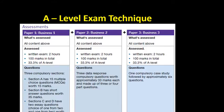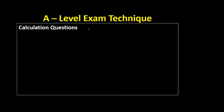Having said that, paper three also requires you to do calculations — in fact, all of the papers will require you to do calculations. They're often hidden in the data in the case study. Paper three last year had a twelve mark question, which involved calculating a ratio analysis and then explaining what it meant. So my point is that you need to do calculations across all three papers.